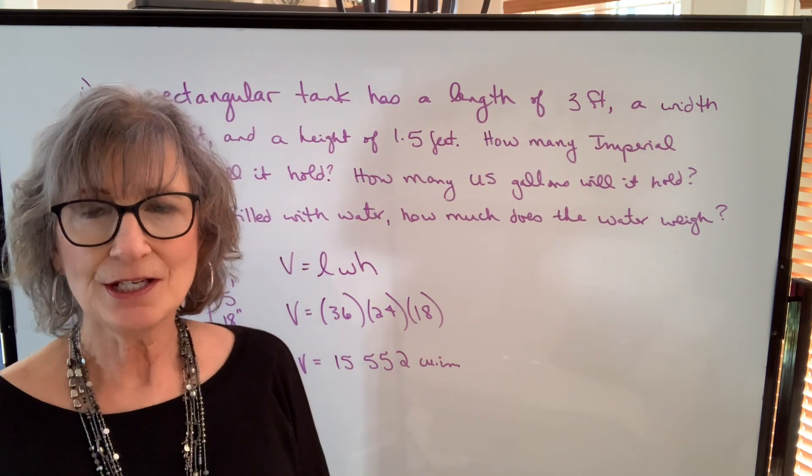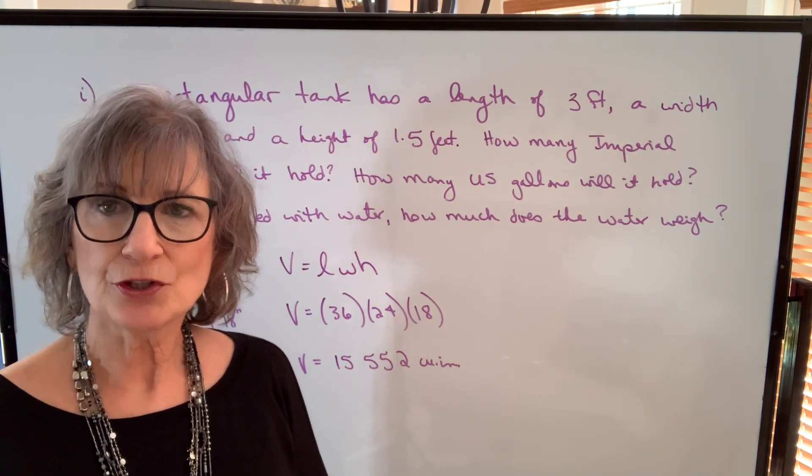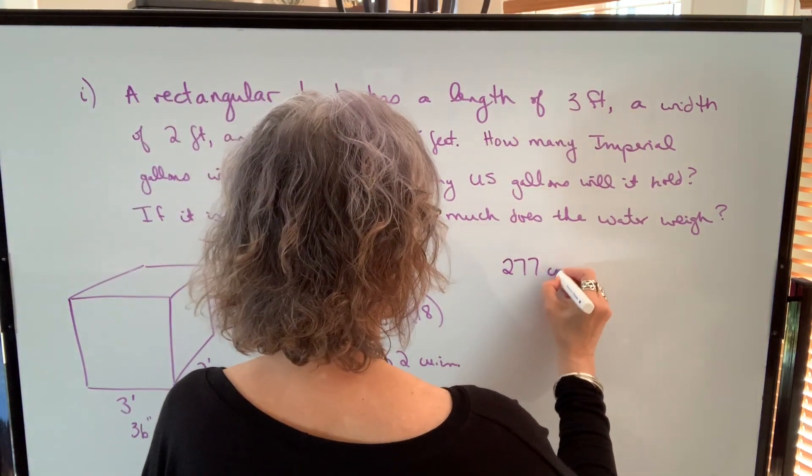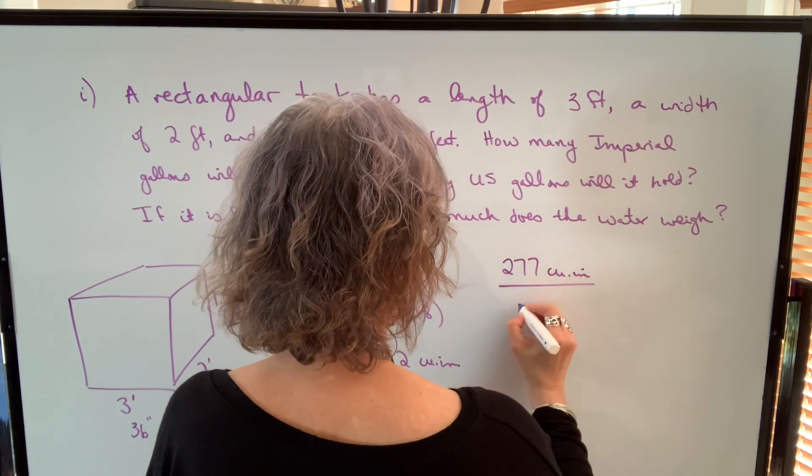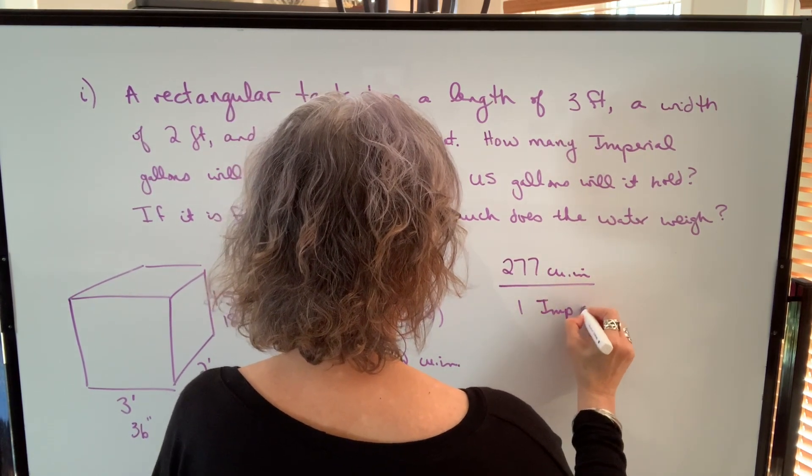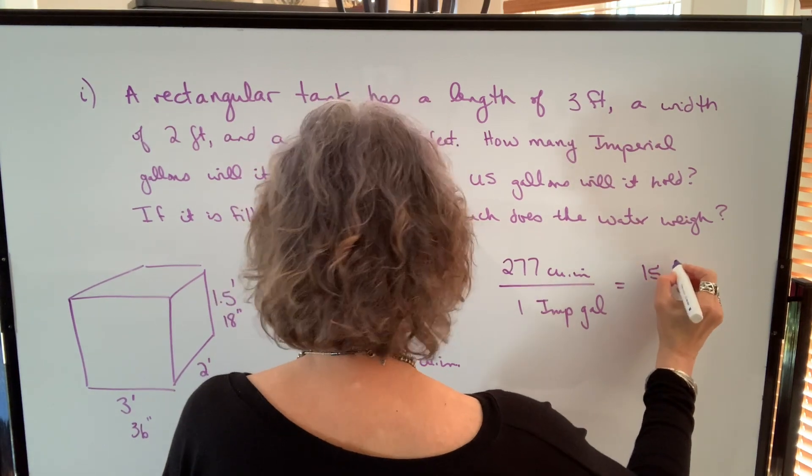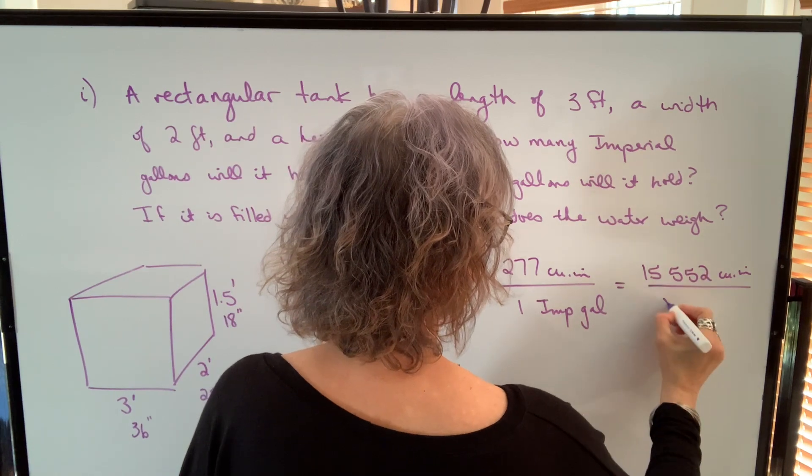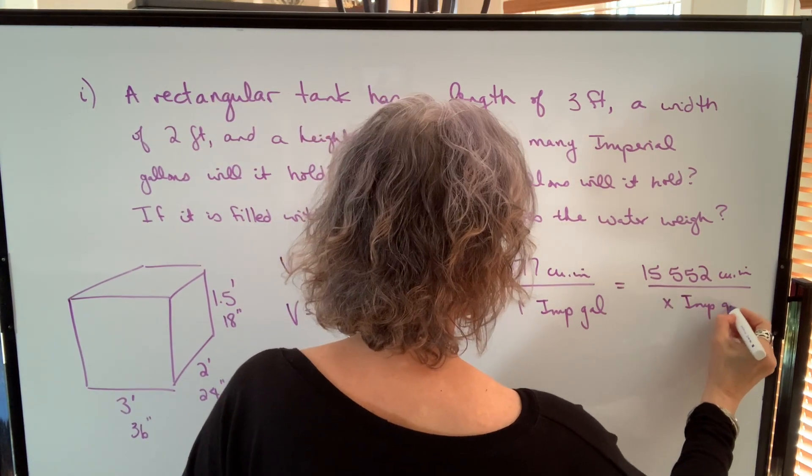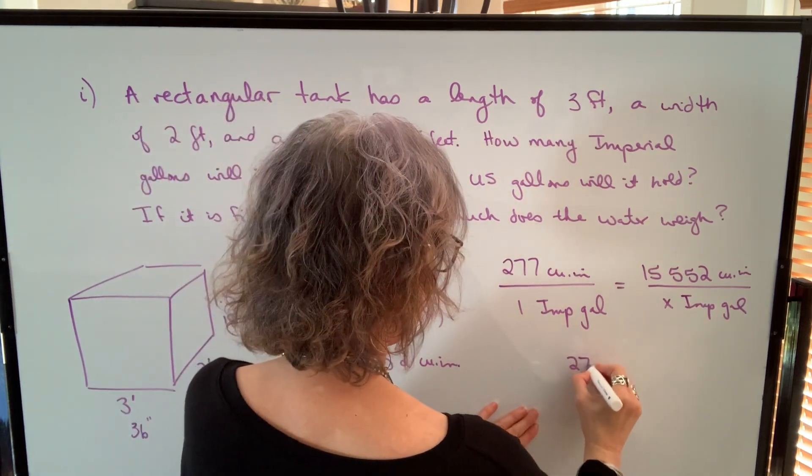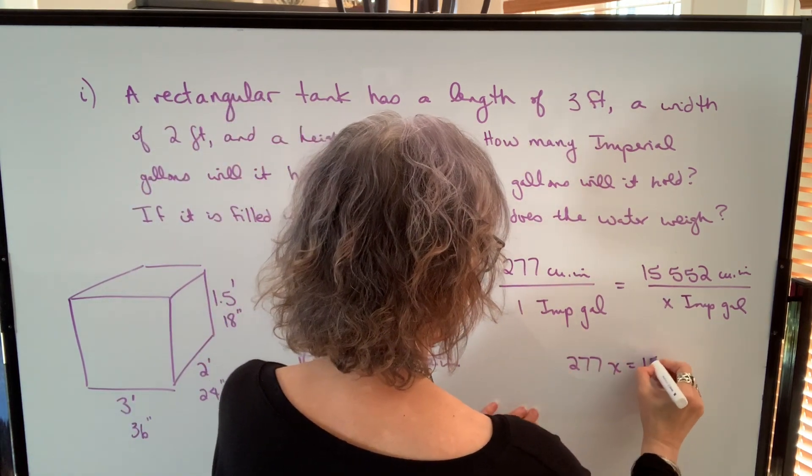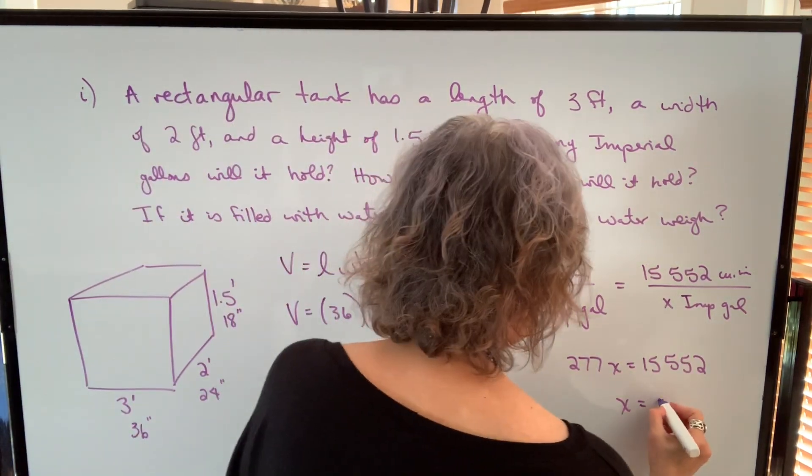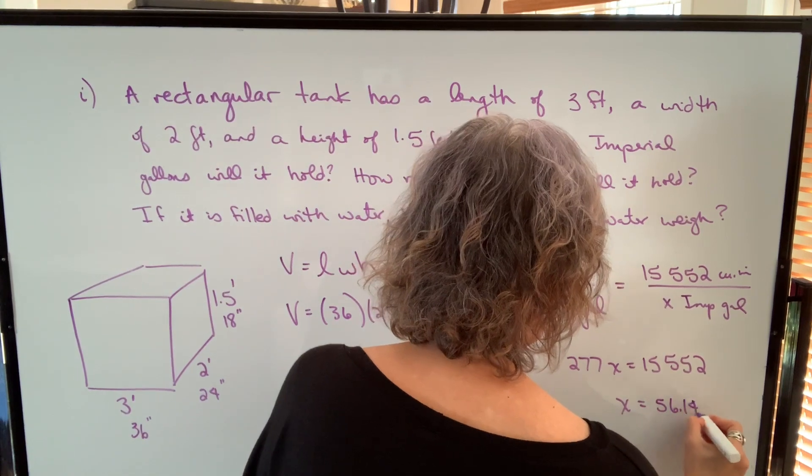Again, I use direct proportion, but this time I'm going to use the 277 cubic inches equals one Imperial gallon. So 277 cubic inches is equal to one Imperial gallon. So if I have 15,552 cubic inches, I can find out how many Imperial gallons. Again, I cross multiply, so 277 times x will equal 15,552. Divide both sides by 277, and I get 56.14 Imperial gallons.